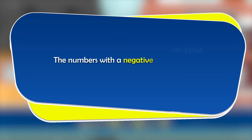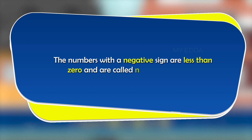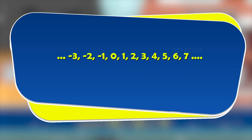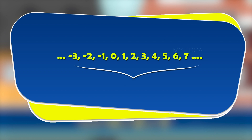The numbers with a negative sign are less than zero and are called negative numbers. They are lined up as the predecessors of zero. The negatives of natural numbers, which are less than zero, when put together with whole numbers, make up integers.